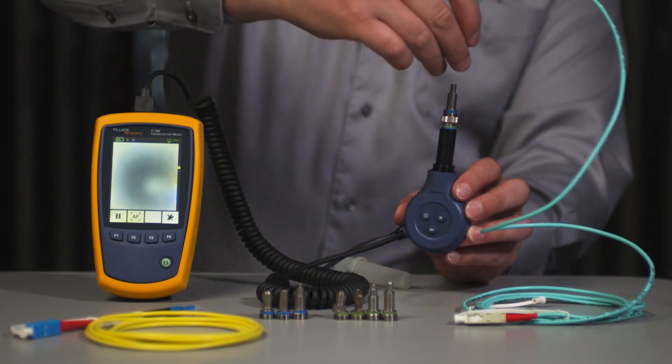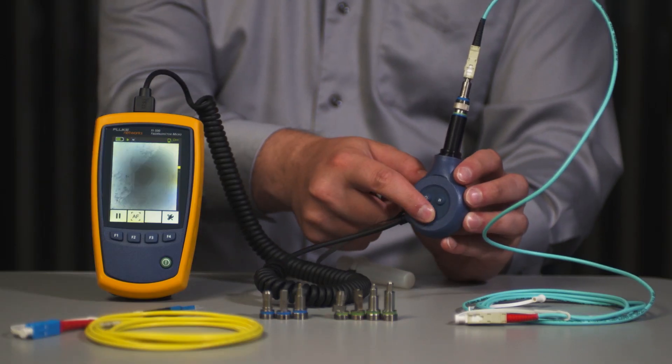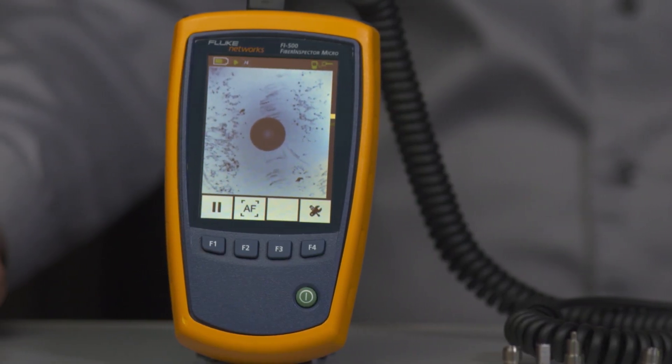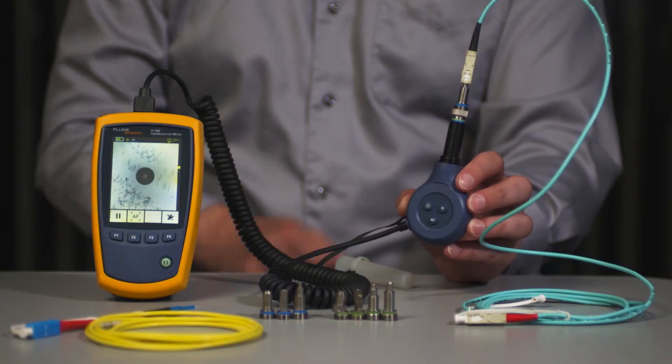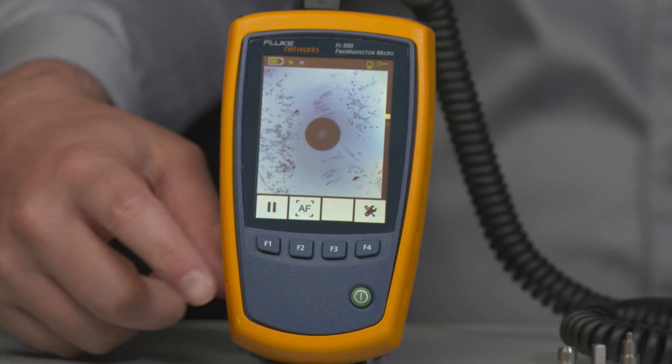Simply plug it into the patch panel or plug the cable into the Fi500 and press autofocus. Within seconds, the autofocus feature brings the UPC fiber end face into sharp clear view. You can autofocus anytime by pressing a button on the probe or the display.